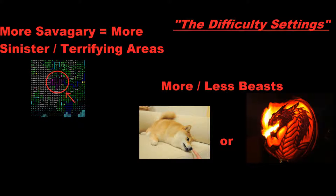The next two settings are the two difficulty settings: Number of Beasts and Natural Savagery. Number of Beasts determines how many Mega Beasts and Titans are in your world when the world initially spawns, which increases your chances of fighting a super powerful beast near you. Natural Savagery increases the difficulty by increasing the amount of areas shaded in purple, which means they're either haunted, terrifying, or sinister — making everything in those areas more difficult. It's really fun if you want a challenge, but if you want to go easy, I recommend medium for both settings.